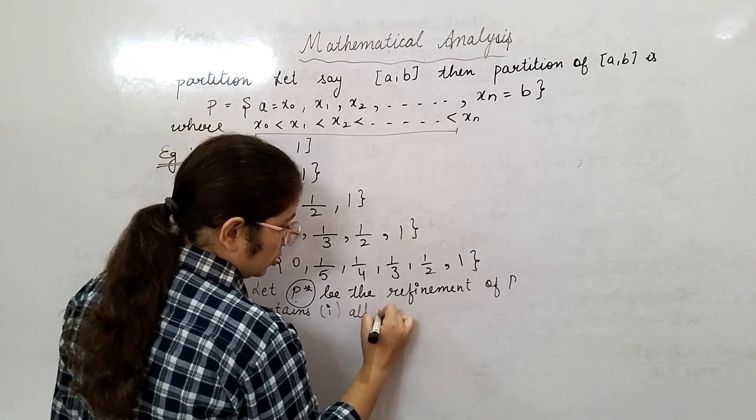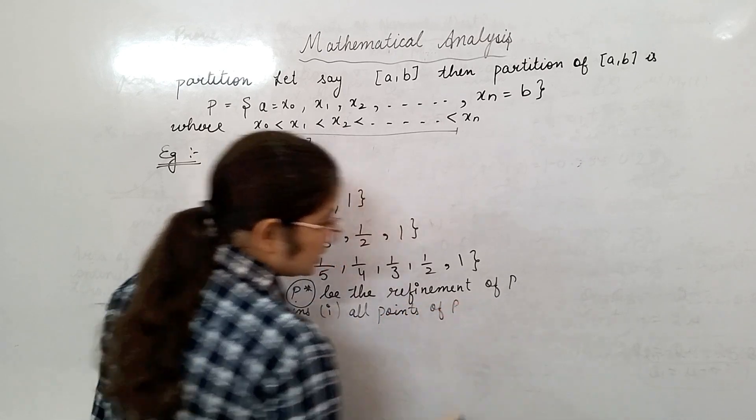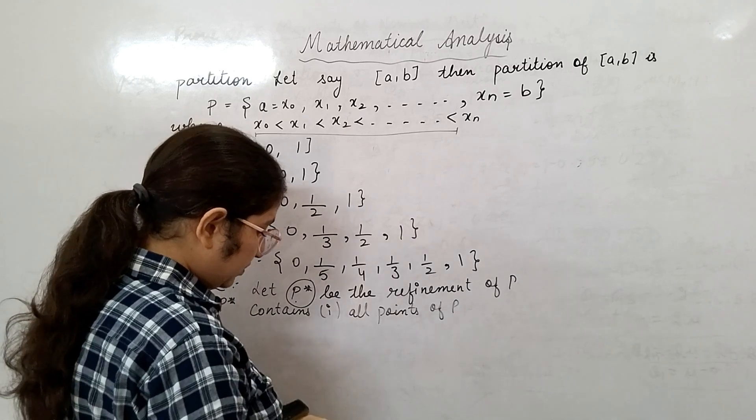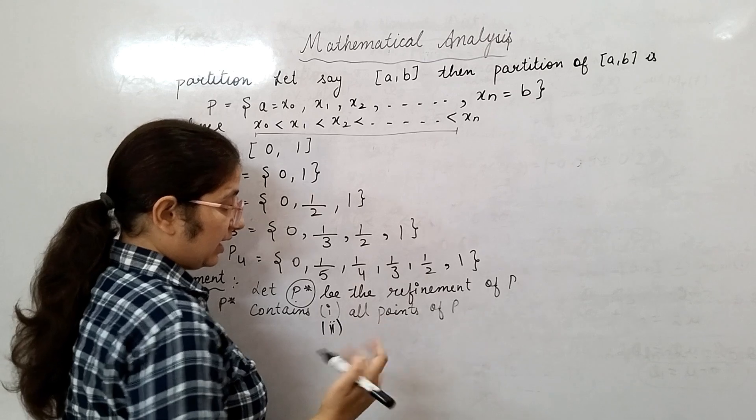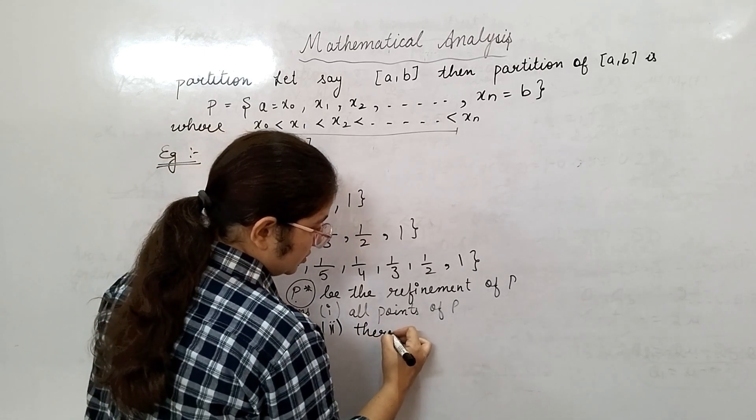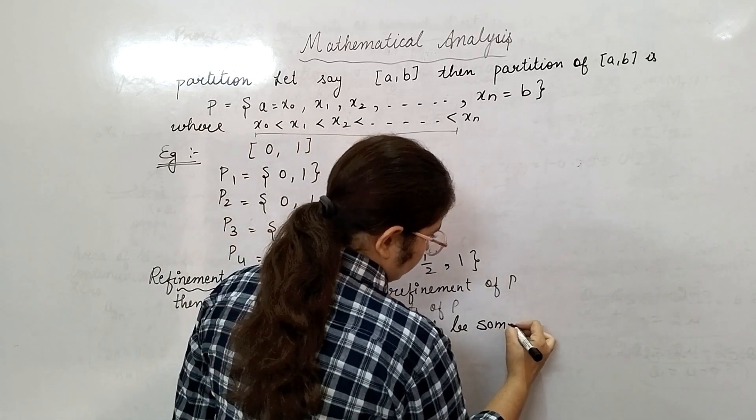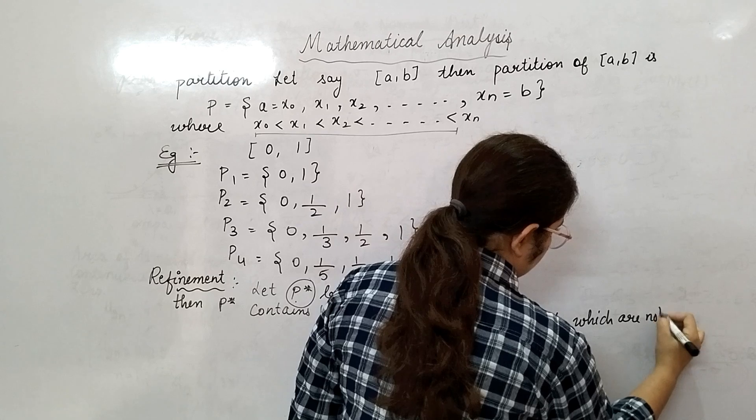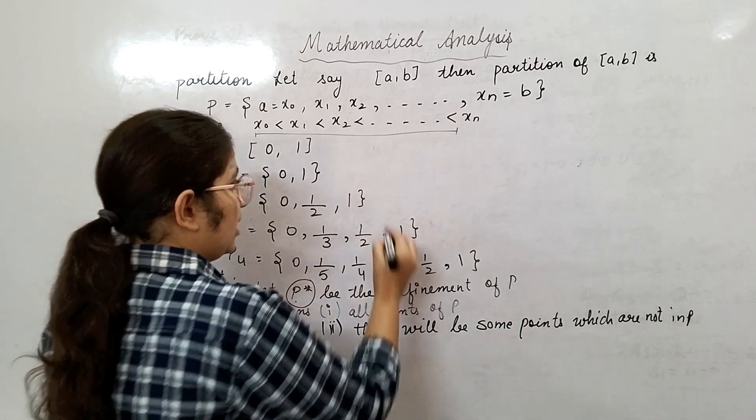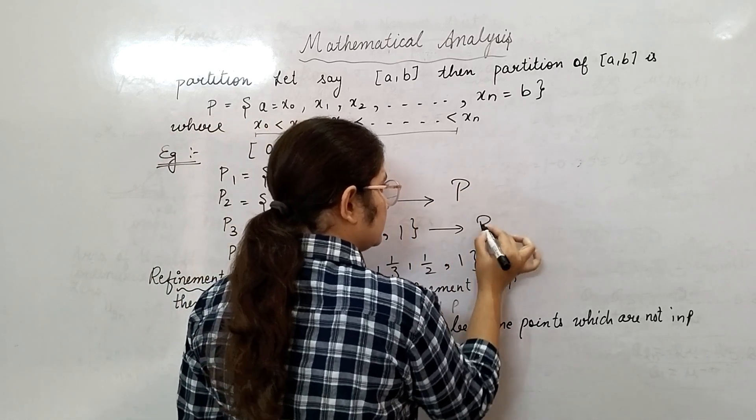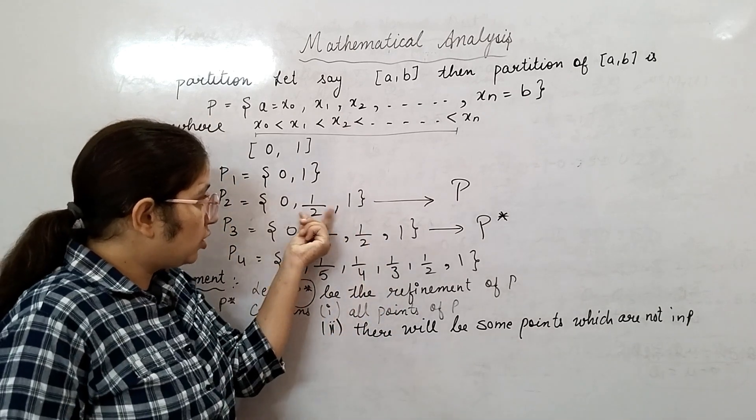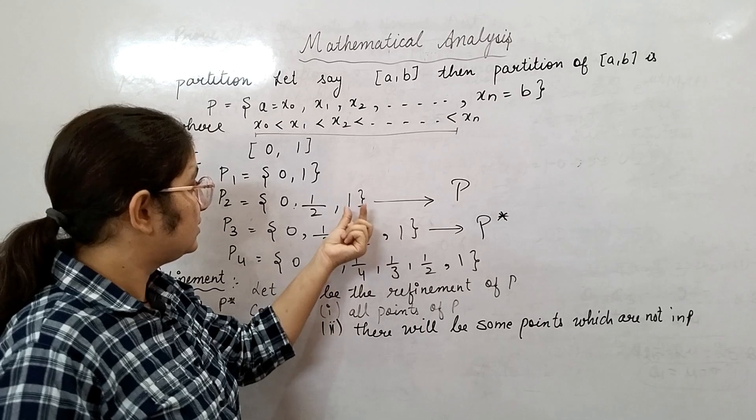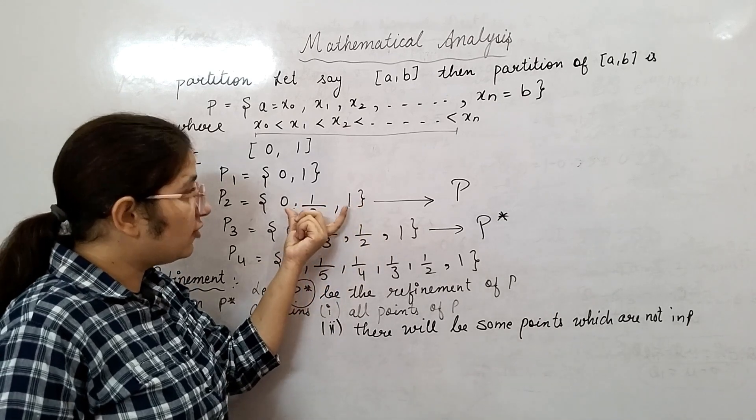Then P* contains, first thing, all points of P. And second, there will be some points which are not in P. In this example, say this is your partition P and this is your partition P*. The P* contains all points of P: 0, 1/2, 1. And it is containing one point more than this - which is 1/3.